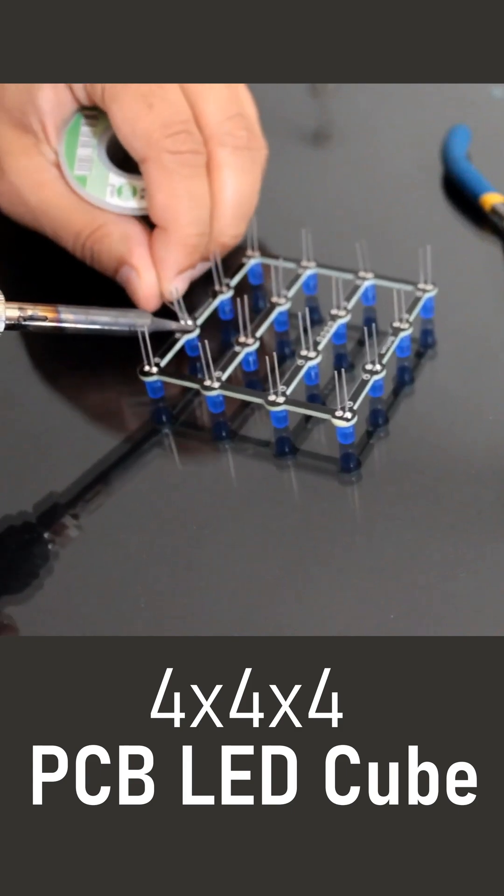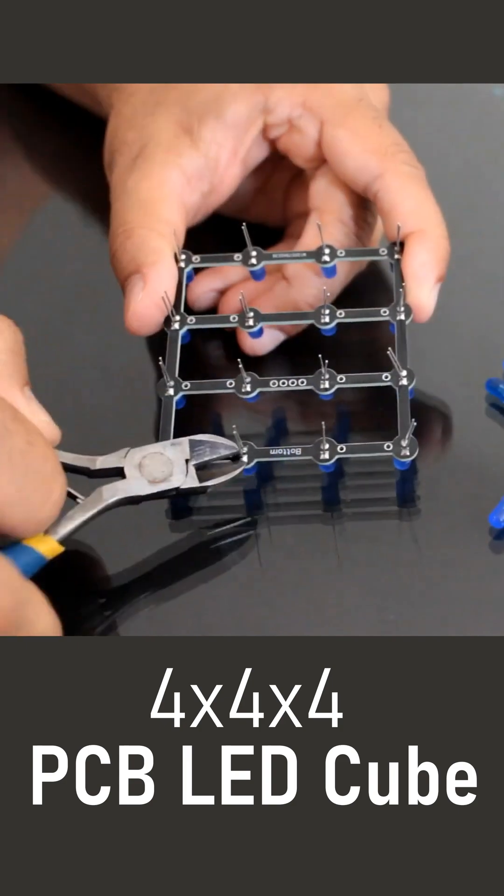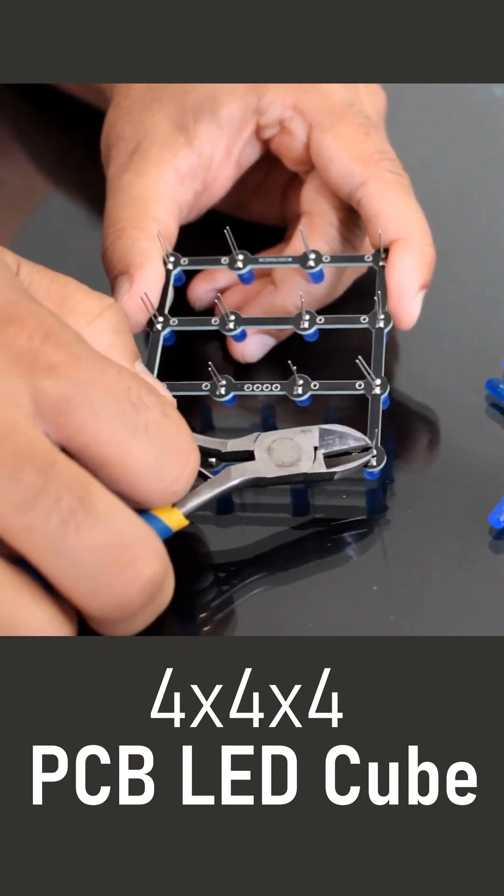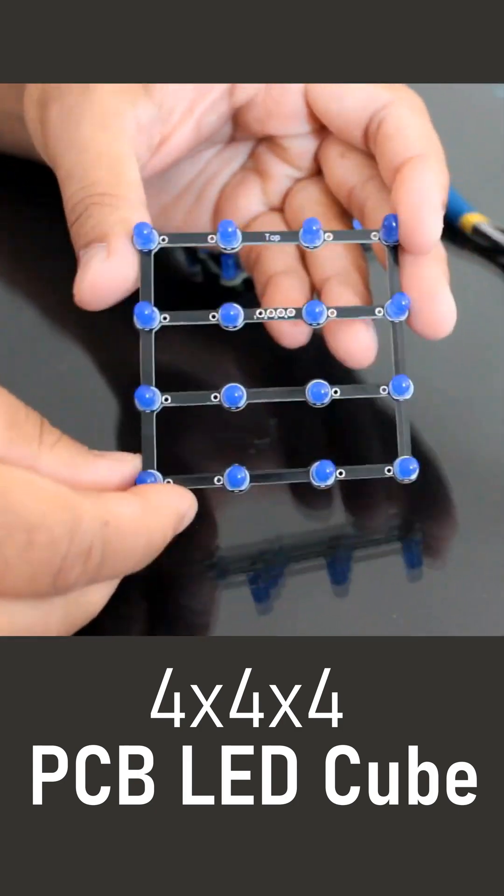One by one, I added all the LEDs to the board. While soldering the LEDs, please make sure that they are all added to the top side of the board. Once all LEDs were in, I went ahead and soldered them to the board.